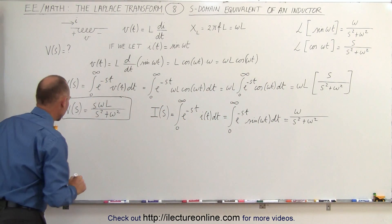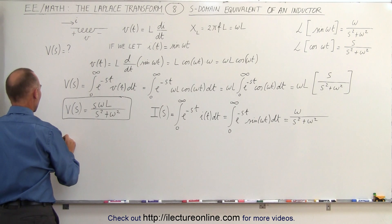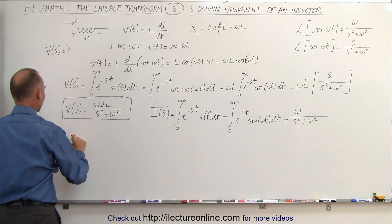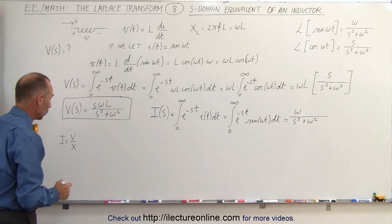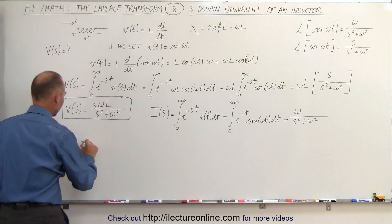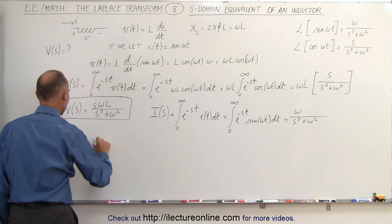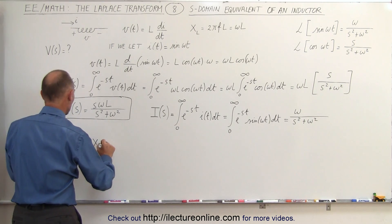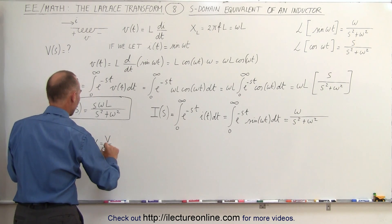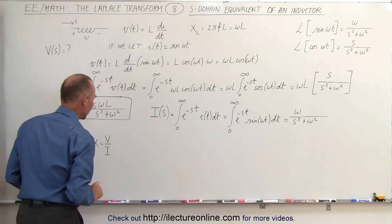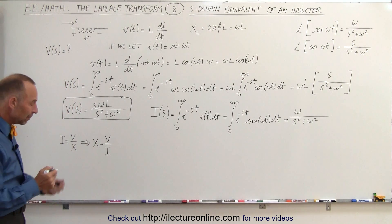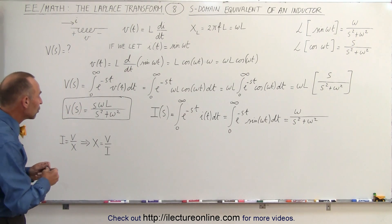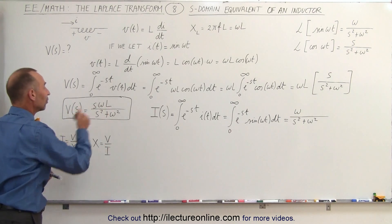Now remember that via Ohm's law, the current I is equal to V divided by the reactance in the case of an inductor. If we want to solve for the reactance, we can say that the reactance X is equal to V over I. And since we're now in the frequency domain, not the time domain, let's use the equations for V and I that we just found.